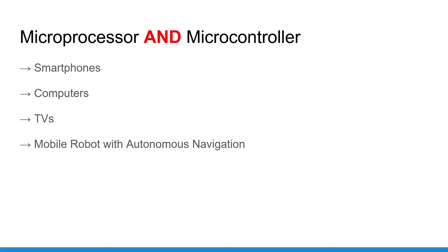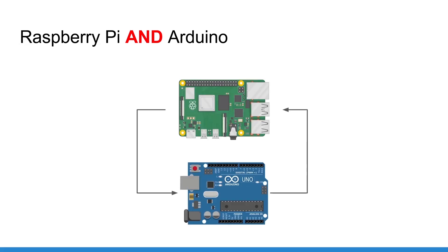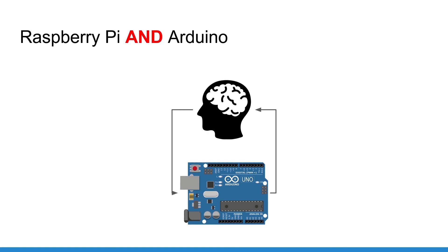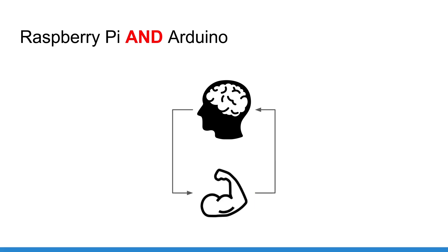To conclude, you can see the Raspberry Pi or microprocessor as the brain of your application, and the Arduino or microcontroller as the muscles of your application.